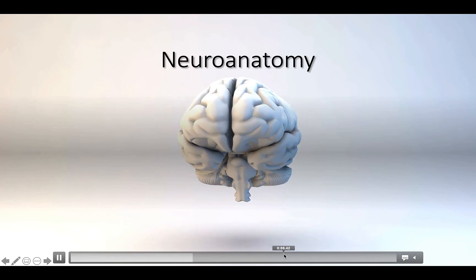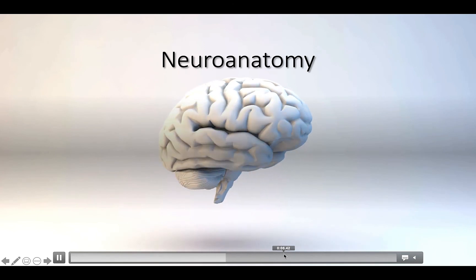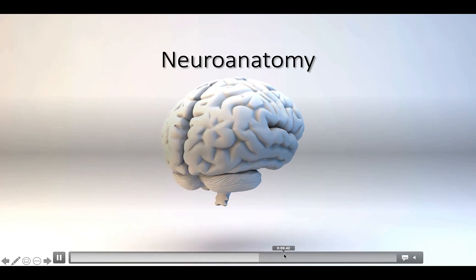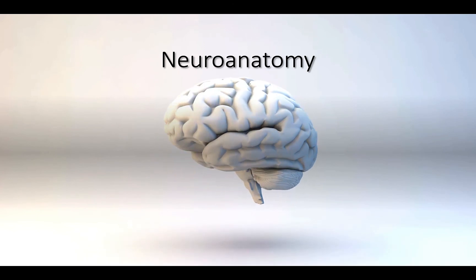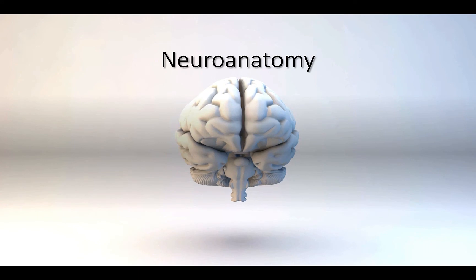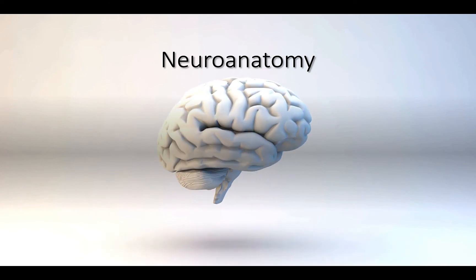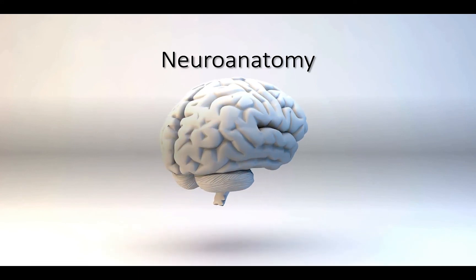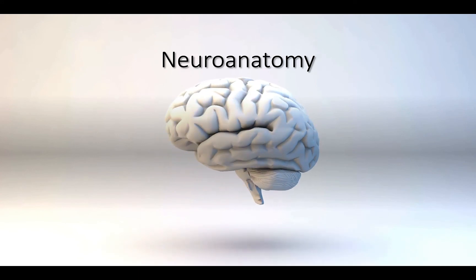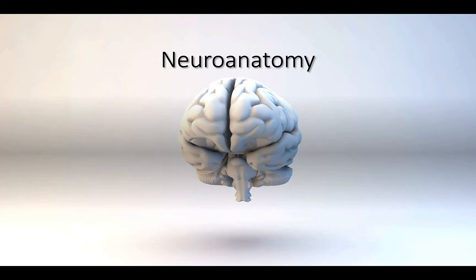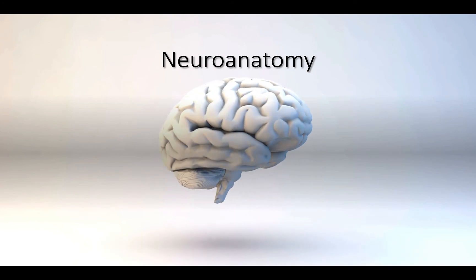Now that we've discussed how the nervous system functions at a molecular and cellular level, we can move into the anatomical organization of the brain. We won't go into exhaustive detail here, as many of these structures will be covered in lab.